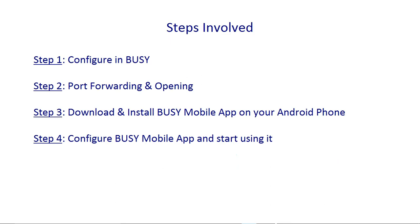Steps required for implementing Busy Mobile App are: Step 1 - Configure in Busy. Step 2 - Port forwarding and opening. Step 3 - Download and install Busy Mobile App on your Android phone. Step 4 - Configure Busy Mobile App and start using it.